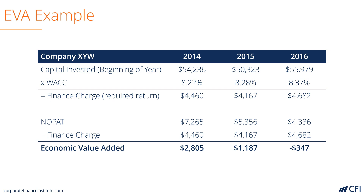Below that section of the table, we have NOPAT, the net operating profit after taxes. As long as NOPAT is greater than the finance charge, the company is generating economic value. If NOPAT is less than the finance charge, or required rate of return, it is destroying economic value. We simply take the difference between NOPAT and the finance charge to see the economic value added per year. Thank you for joining us for this tutorial on EVA.